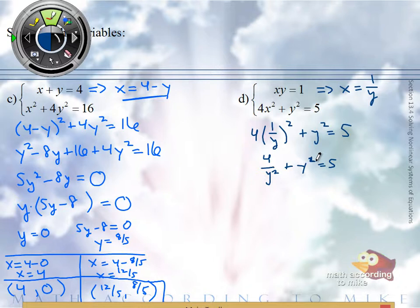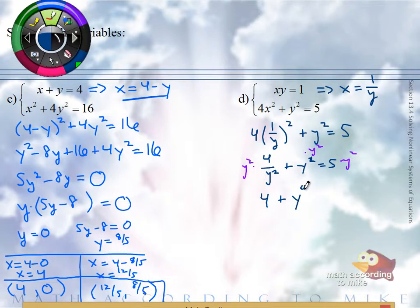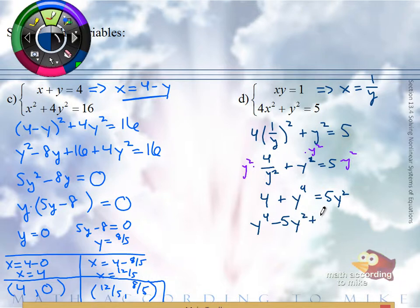4 times (1 over Y) squared is the same thing as 4 over Y squared — don't square the 4. Y is what we're trying to solve for and we have a Y in the denominator, so to get it out of the denominator we multiply everything by Y squared. 4 over Y squared times Y squared is 4, Y squared times Y squared is Y to the fourth. On the right we get 5Y squared. Bring that 5Y squared to the left.